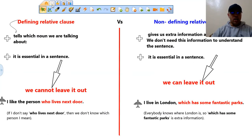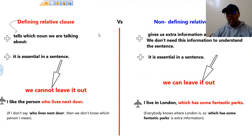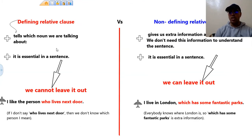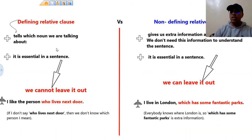So now we're going to make the differences between defining relative clause and non-defining relative clause. A defining relative clause tells us which noun we are talking about — it identifies and restricts which noun we are describing. It is essential in a sentence, which means if we leave it out, the sentence cannot give complete meaning.